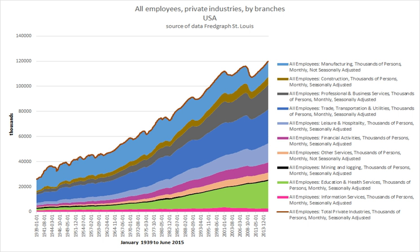The main ways for employers to find workers and for people to find employers are via job listings in newspapers and online, also called job boards. Employers and job seekers also often find each other via professional recruitment consultants which receive a commission from the employer to find, screen and select suitable candidates. However, a study has shown that such consultants may not be reliable when they fail to use established principles in selecting employees.